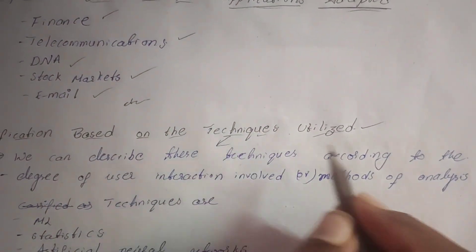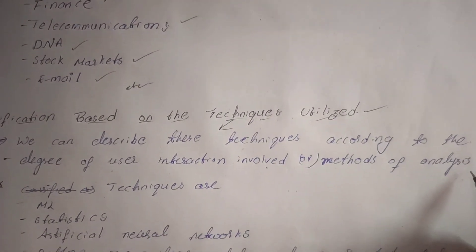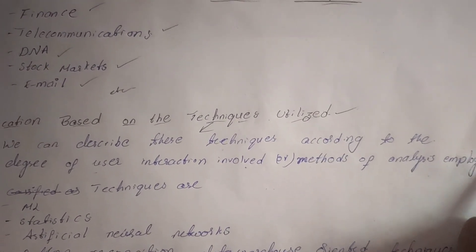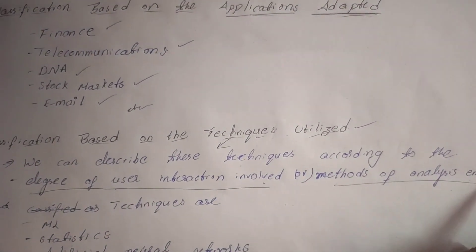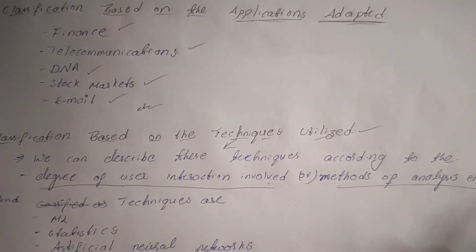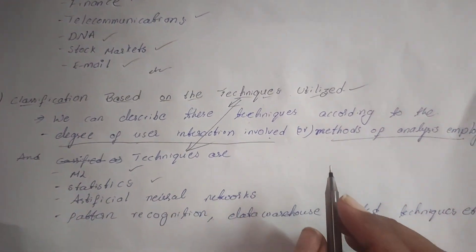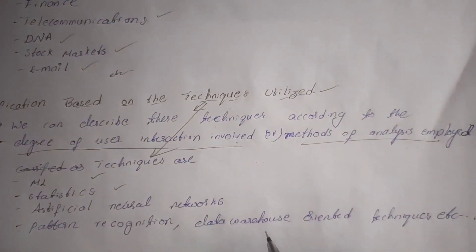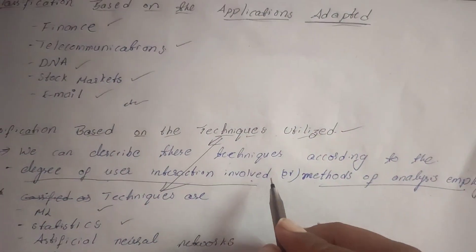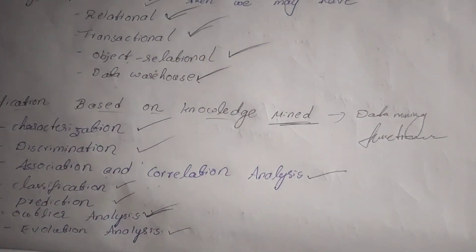The last classification is based on techniques utilized. These techniques are described according to the degree of user interaction involved or the method of analysis employed. Techniques include machine learning, statistics, artificial neural networks, pattern recognition, and data warehouse oriented techniques.